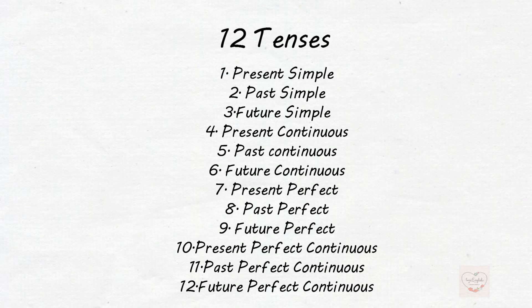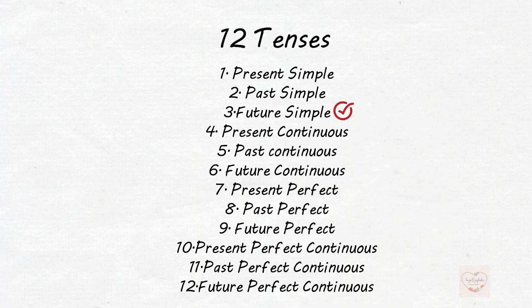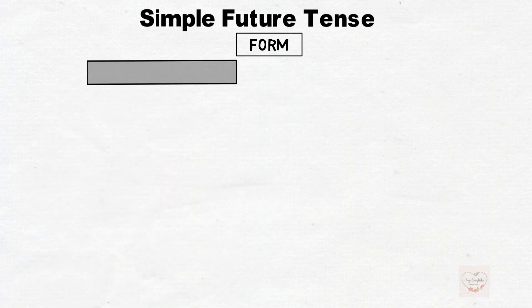Today the lesson is about simple future tense. Here we're going to talk about the formation of sentences, examples, as well as applications. Simple future tense. This tense is used to describe an action that hasn't happened yet.